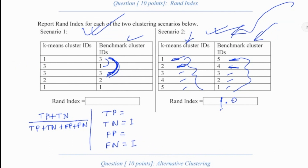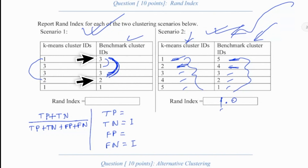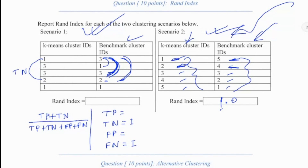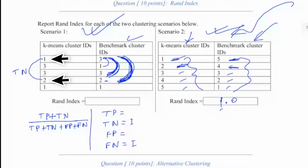We now consider the next pair. Is it a negative pair or a positive pair? It's a negative pair. We check whether it is falsely negative or truly negative. The two points have two different cluster labels in the benchmark, which means the negativity we saw in the clustering result is truly negative, because the benchmark is also saying they should have different cluster labels. So we have found another true negative, and we record it.